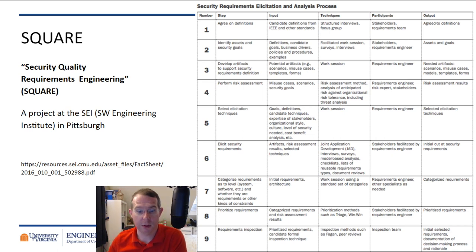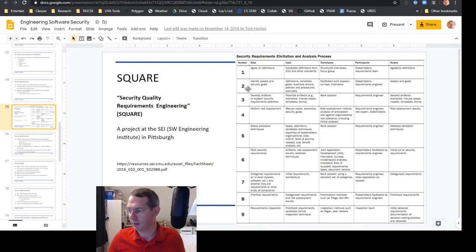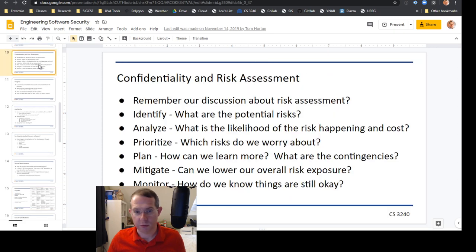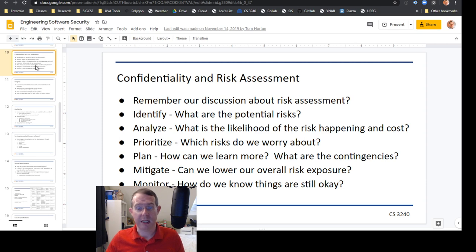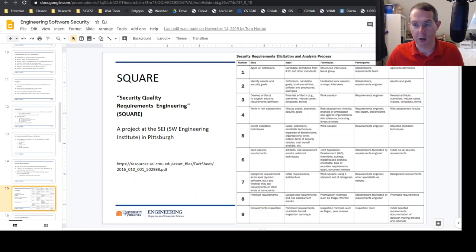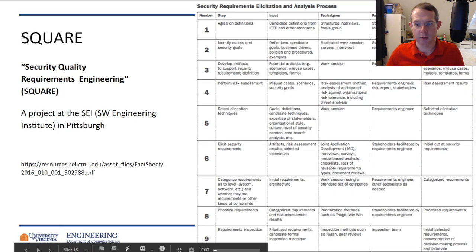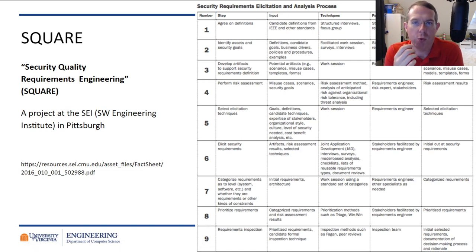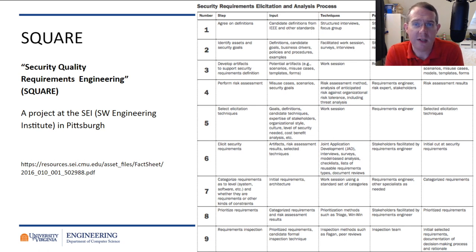Then we develop artifacts to support security requirements definition — can we generate new misuse cases, sequence diagrams, figure out the ways we need to protect this data? We perform the risk assessment: identify the risk, analyze it, prioritize, plan, and mitigate those risks. Then we go through and write specific requirements: 'this particular piece of data must only be accessed by authorized users.' We keep going through, prioritize those, and make sure we've covered everything. It's a checklist for requirements engineers.